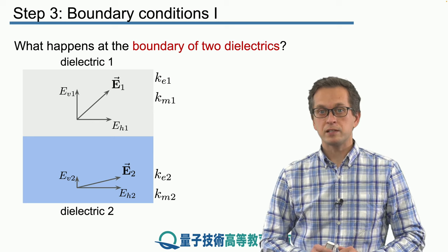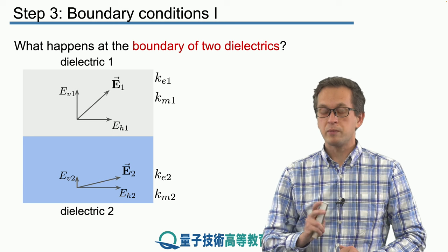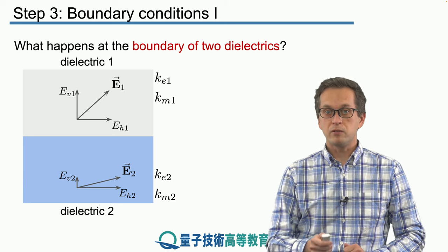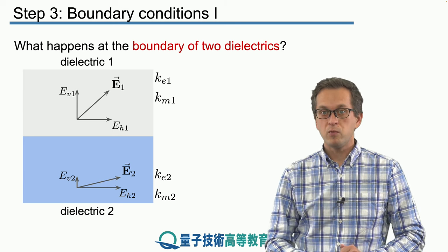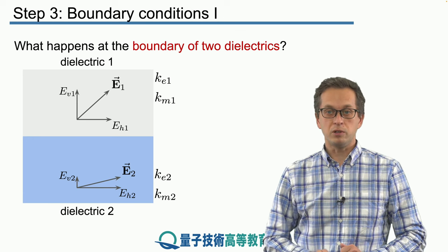The purpose of this lesson and these two steps is to derive relationships between Ev1, Ev2, Eh1, Eh2, and so on.